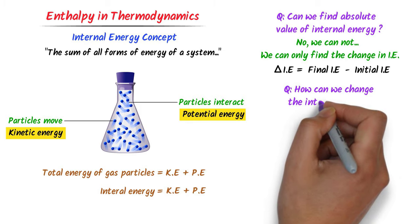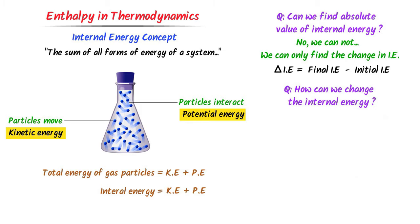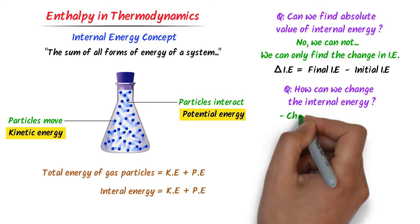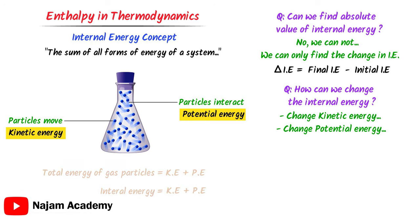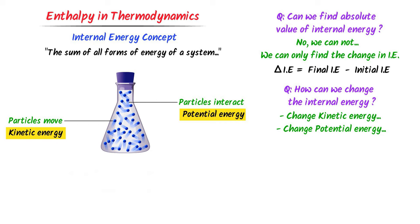How can we change the internal energy of a system? We can change it by two means: either change the kinetic energy of the system or change the potential energy of the system. For example, consider gas enclosed in a container. When we add heat to it, kinetic energy increases and internal energy of the system also increases.